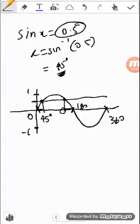So that part here must also be 45 degrees. So you can do 180 minus 45 degrees, and that will give you the answer for the second part. And you can take a similar approach for cos as well.